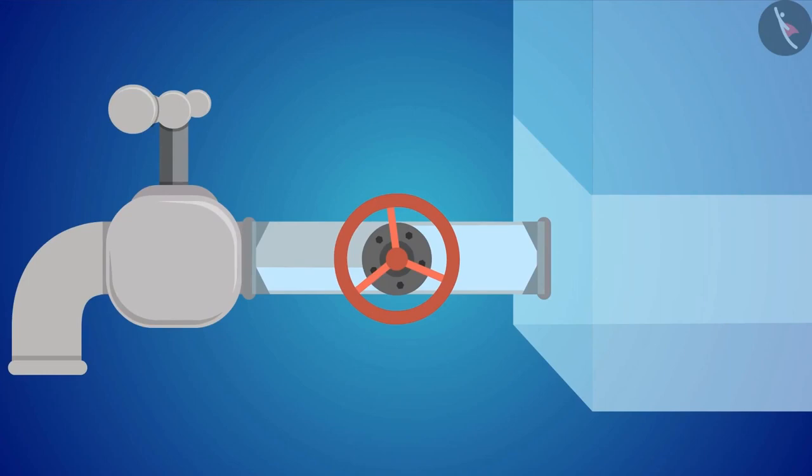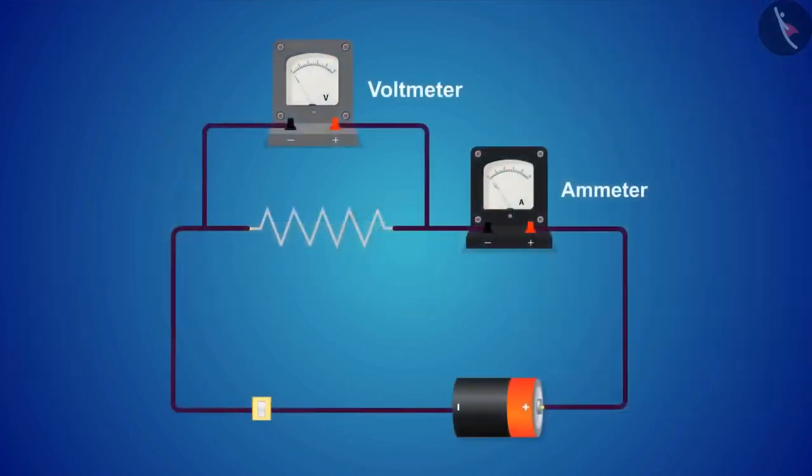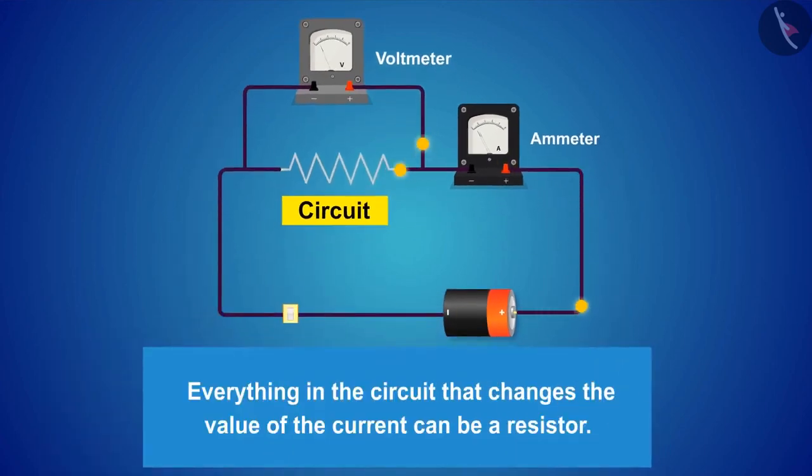If this valve is replaced with a resistor in the circuit, then we can see that the resistor will increase or decrease the current in the circuit. Now you must be wondering what the resistor looks like. Everything in the circuit that changes the value of the current can be a resistor.